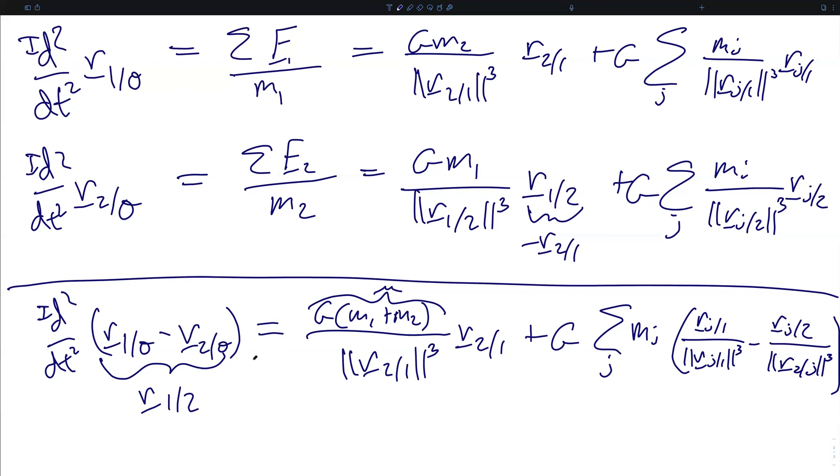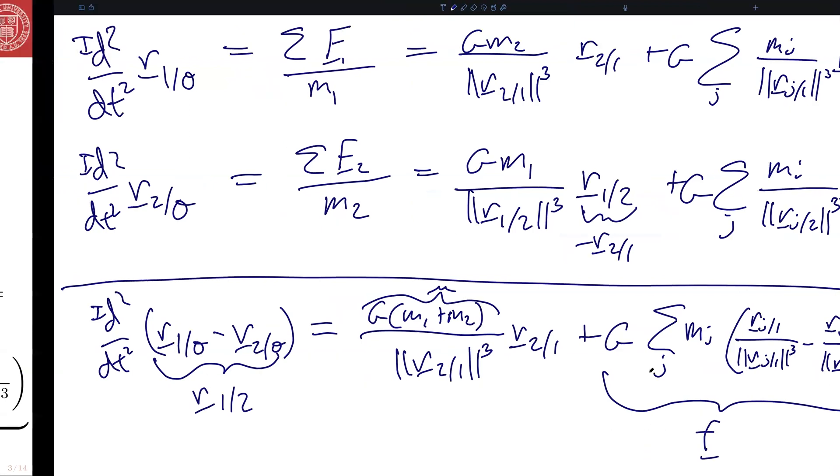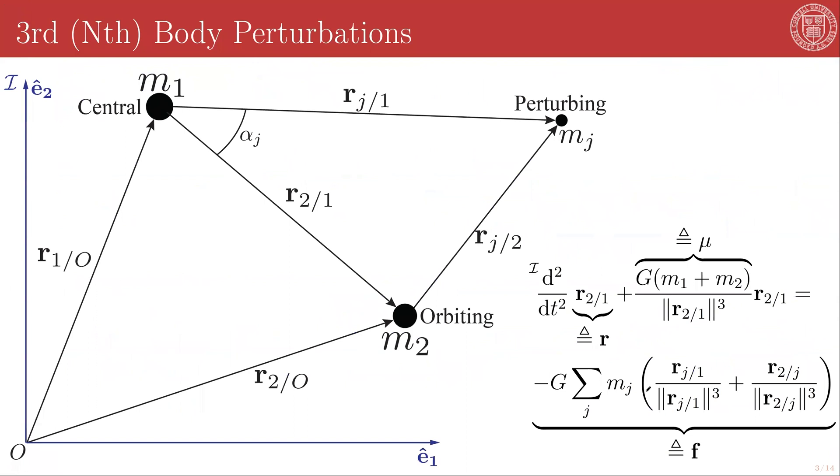So what we've developed here, these two terms, are exactly our original two-body equations of motion for the two-body system composed of masses m1 and m2, plus a specific perturbing force given by this summation. We can write a system of n bodies where one is treated as the central body and one is treated as the orbiting body, and all the other masses are treated as perturbers exactly in the form of our perturbed two-body equations of motion. And this brings us to Cowell's method.